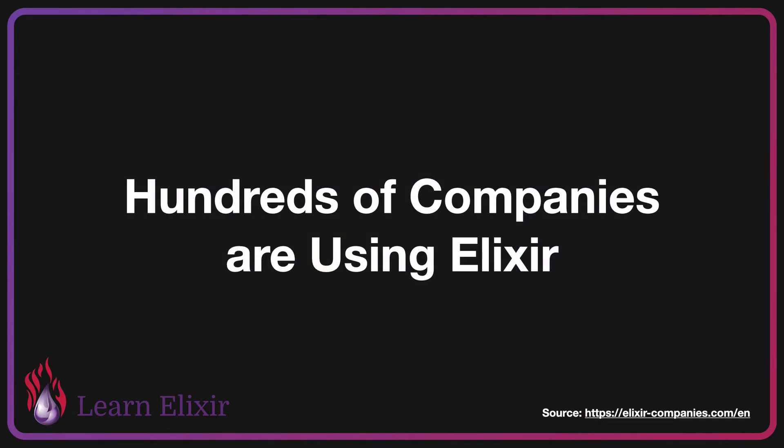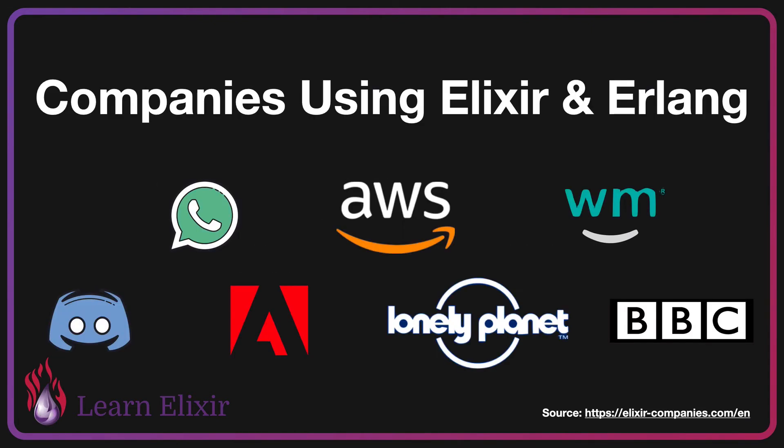Hundreds of companies are starting to use Elixir, and a lot of them have been using Elixir or Erlang for a very long time, with more and more joining every single year. Some of the companies using Elixir and Erlang are WhatsApp for its messaging framework, AWS for its SimpleDB, Weedmaps for a lot of its backend architecture, Discord for its chat features, Adobe, Lonely Planet, and BBC. All chose to use Elixir or Erlang due to its fault tolerance and high scalability. Because of the tooling available in the ecosystem, it's incredibly easy to debug your production apps, or even get basic metrics and telemetry up and running — all the tooling just comes out of the box.